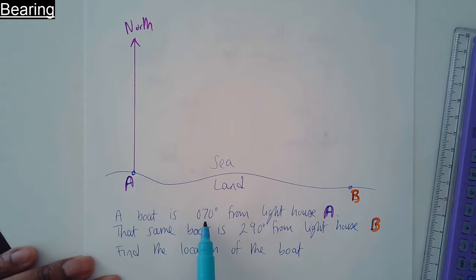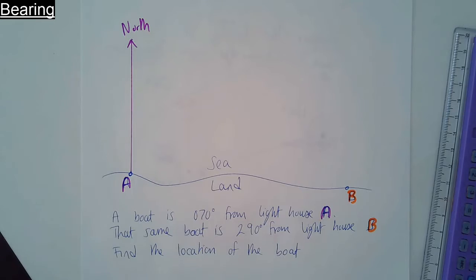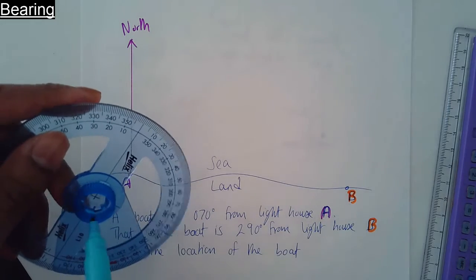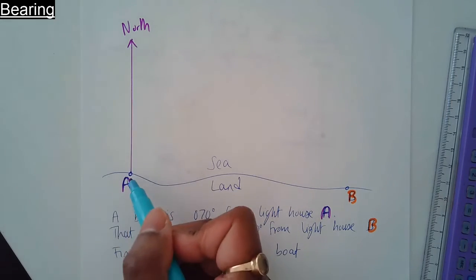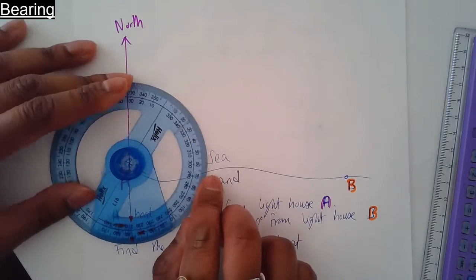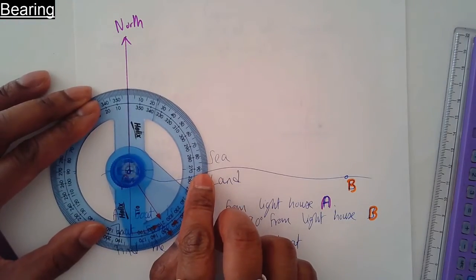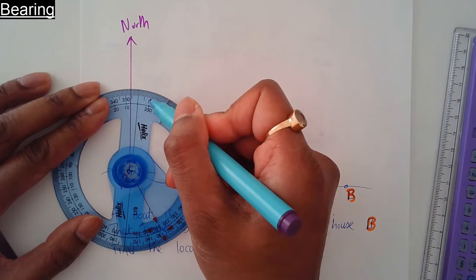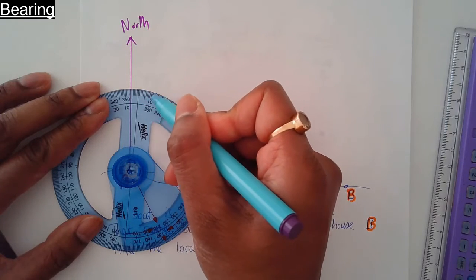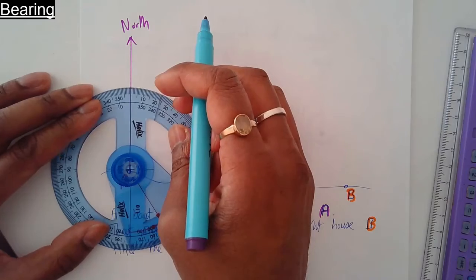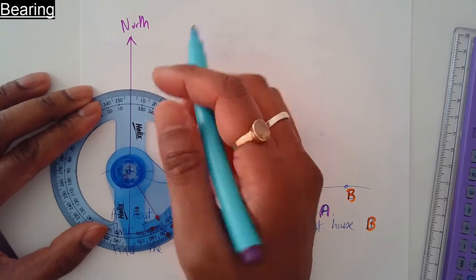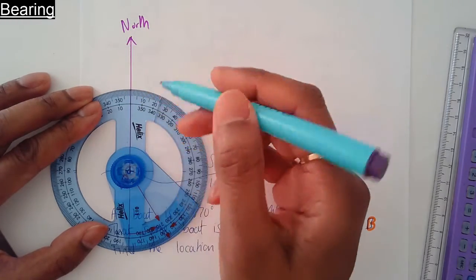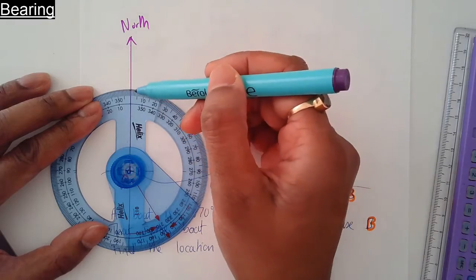It needs to be 070 degrees from A. Center the protractor on that dot and make sure the zero degrees—it doesn't say zero there but you can assume it's zero—line up the zero degrees with the north line, and then measure. Remember, it's got to be clockwise from the north line. Seventy is right there, just put a mark there.